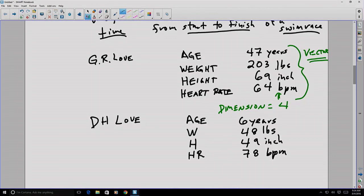This ordered list of quantities defines the basis of the vector. In other words, this set of quantities, the age, the weight, the height, the heart rate, are the basis of our vector.